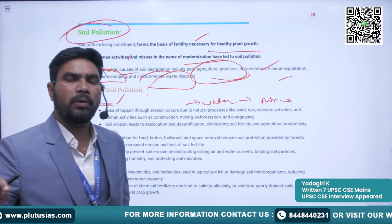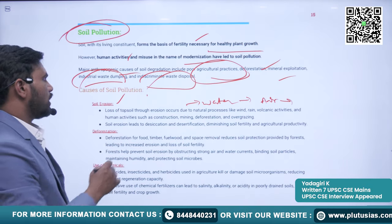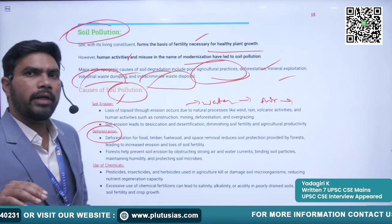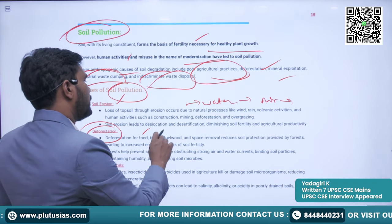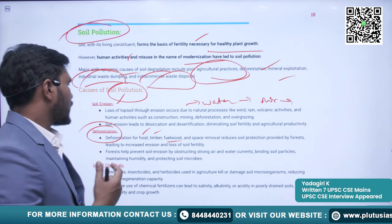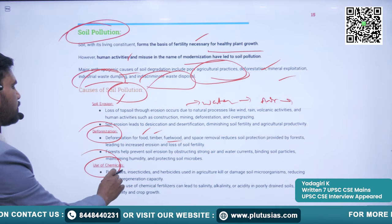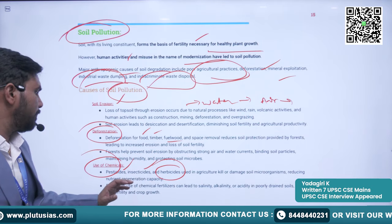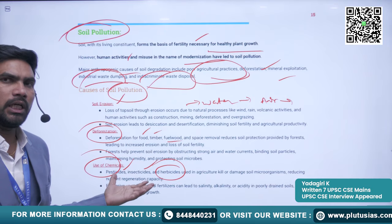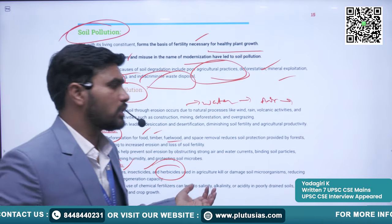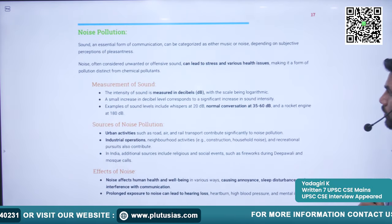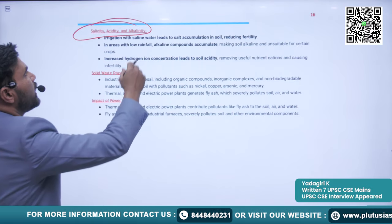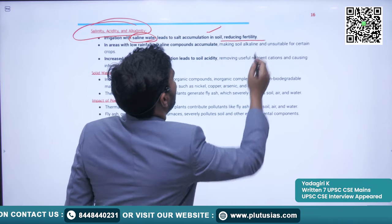Deforestation — removal of forest cover for food, timber, firewood, etc. — also depletes the soil. Use of chemicals such as pesticides, insecticides, and herbicides in agricultural processes contributes to soil pollution. Many hazardous chemicals used in industries and industrial processes also contribute to soil pollution.